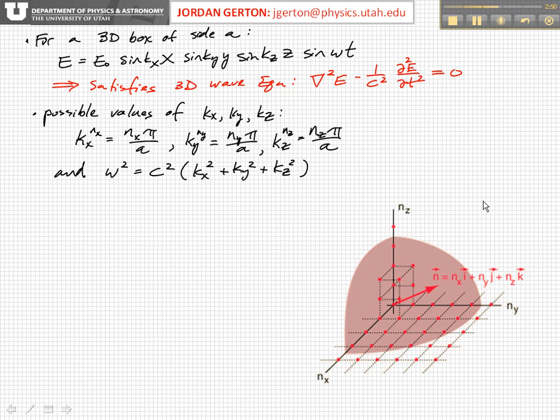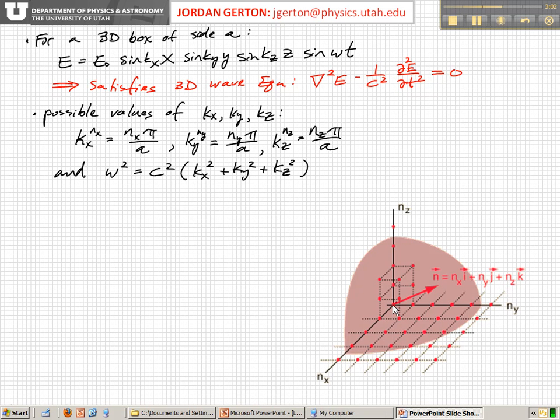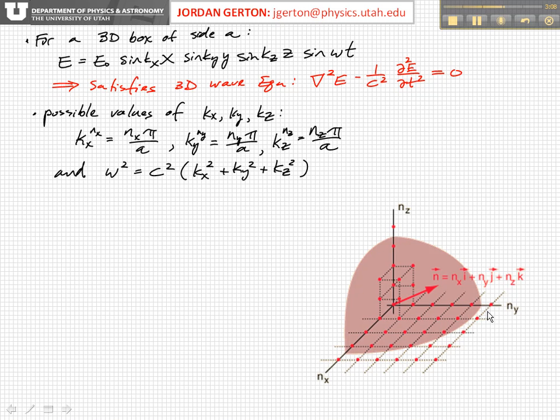So here I've basically depicted what I just said. We have a three-dimensional grid of axis, a three-dimensional space with axes nx, ny, and nz. And there's a three-dimensional grid which corresponds to the different enumerated values of the different, of each nx, ny, and nz.